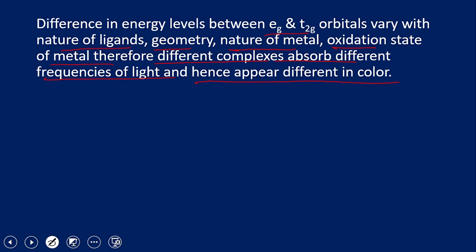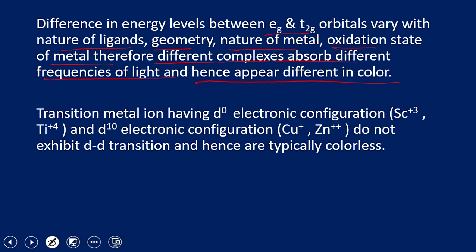For a transition metal to form a colored compound, the metal ion must have a d-electron configuration between d1 and d9. If the configuration is d0, there are no electrons to undergo d-d transition. If it is d10, all electrons are paired and stabilized, so no transition occurs. Compounds of zinc(II) and copper(I), which have d10 and d10 configurations respectively, are colorless for this reason.